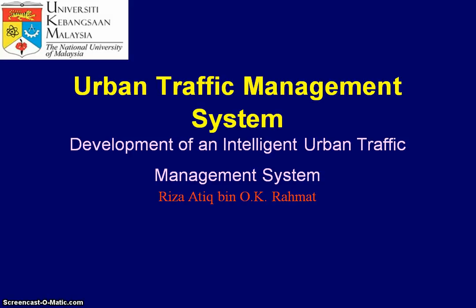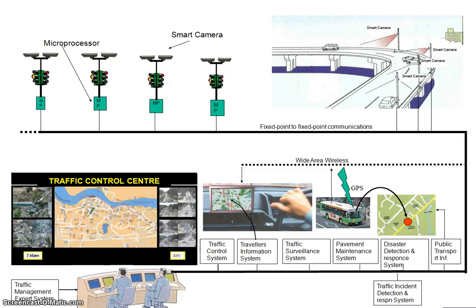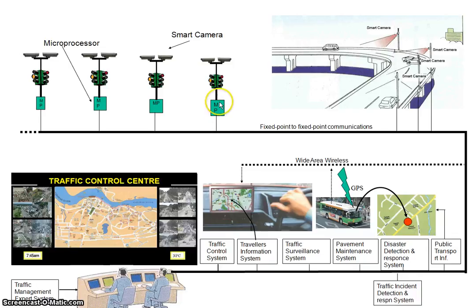Hopefully it will work for a few more years. Basically, our system works like this: we have a microprocessor for every traffic light and a smart camera — actually a normal digital camera. The microprocessor performs image processing to count traffic volume, detect accidents, and measure queue length. Based on those parameters, the microprocessor optimizes traffic flow. We also have a wireless communication system to detect incidents or accidents.